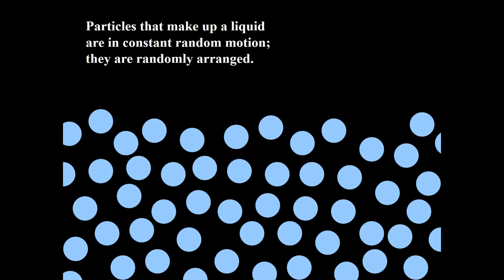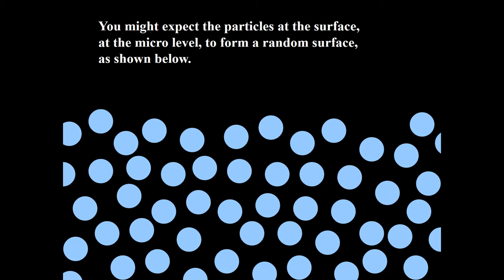Due to kinetic energy, the particles that make up a liquid are in constant random motion, and so they will have a random arrangement. You might expect the particles at the surface at the micro level to form a random surface as shown here.